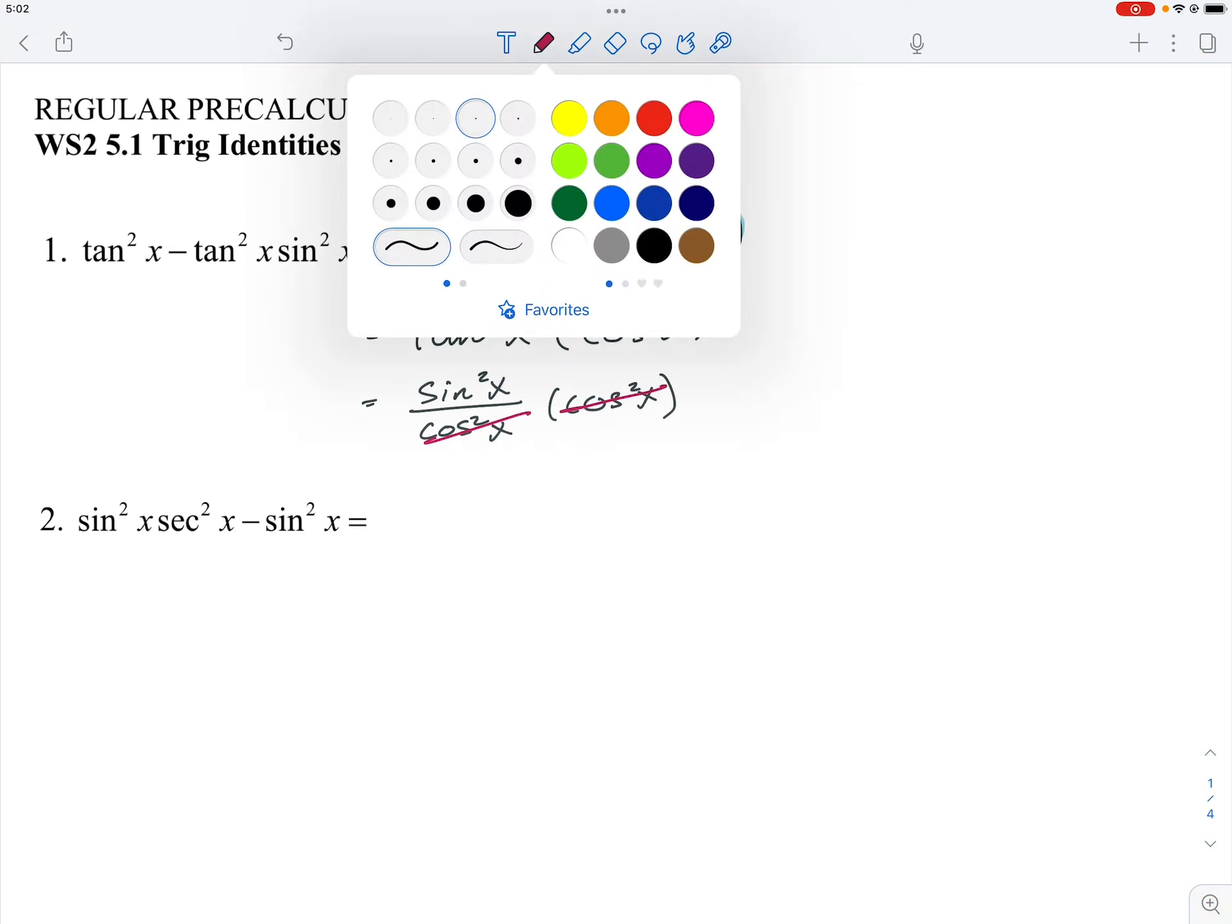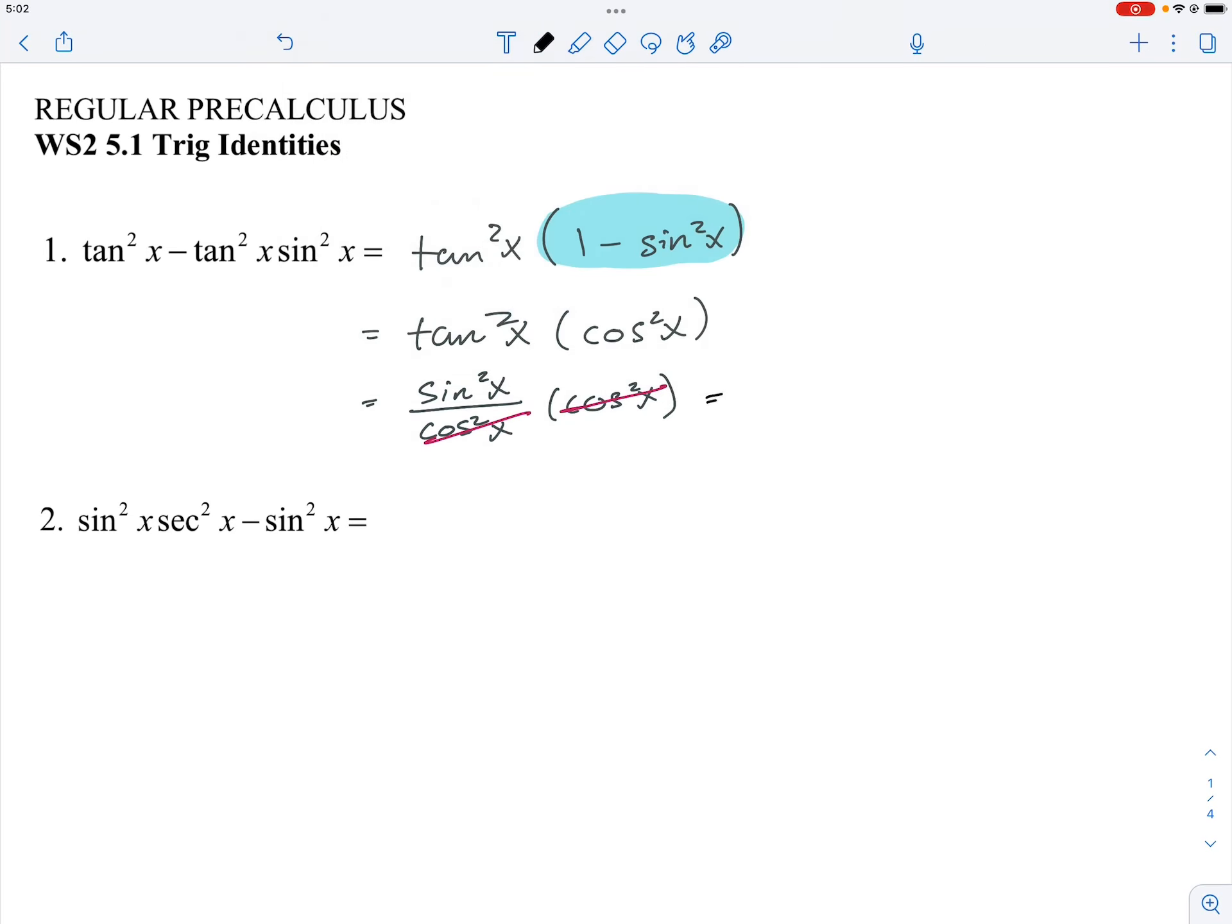So at the very end, our answer is simply sine square x, okay? So we can actually reduce it to just sine square x. Simple. But you can only see the simplicity of this if you are able to handle the mental math, if you can handle the thinking of possibilities.